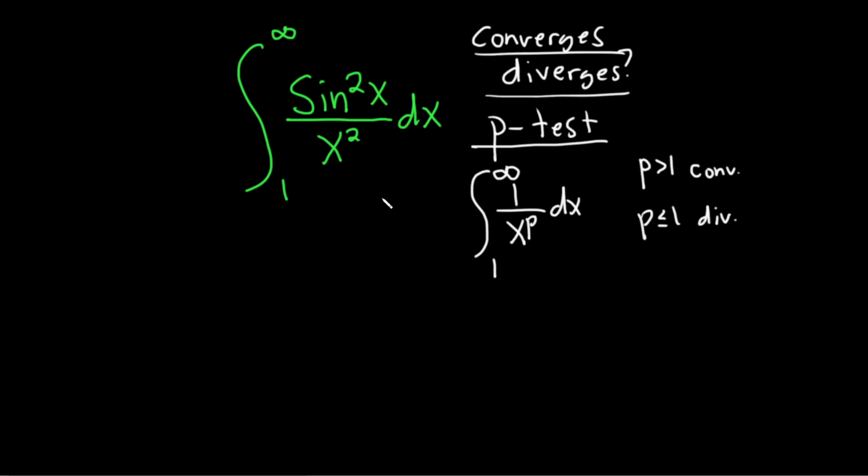So here you see it's almost like 1 over x squared, in which case it would converge. But you have a sine squared function here. So there's another test we have to use. It's called the comparison test.